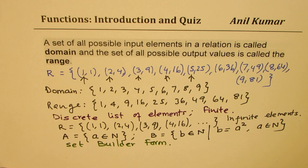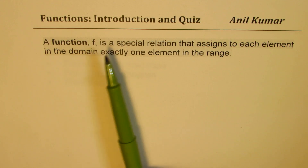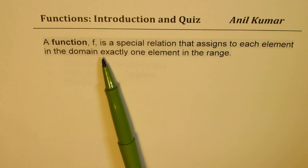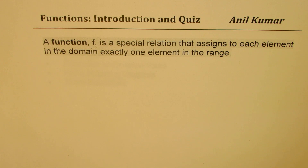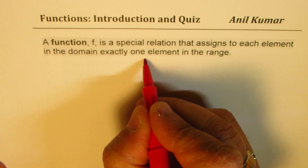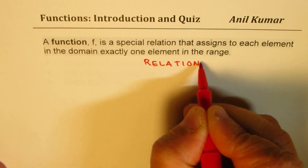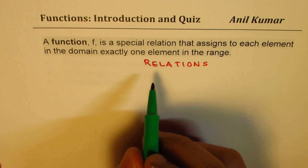Now let's talk about our main topic: a function. A function f is a special relation that assigns to each element in the domain exactly one element in the range. To understand this, let's return to the types of relations and figure out which qualify as functions.